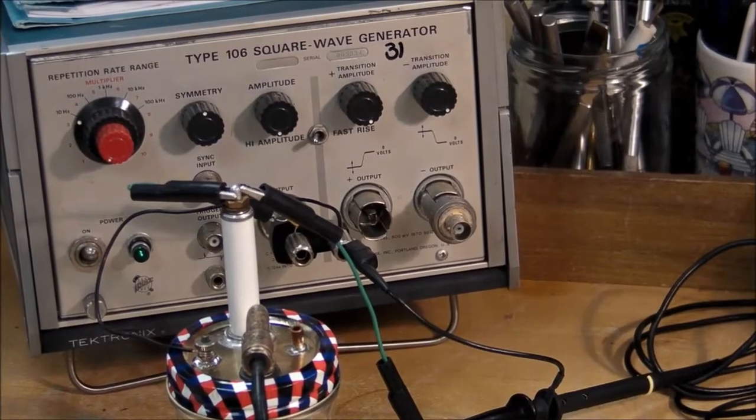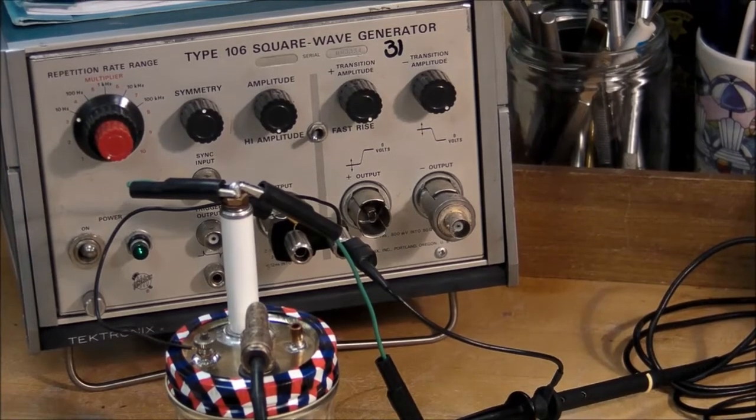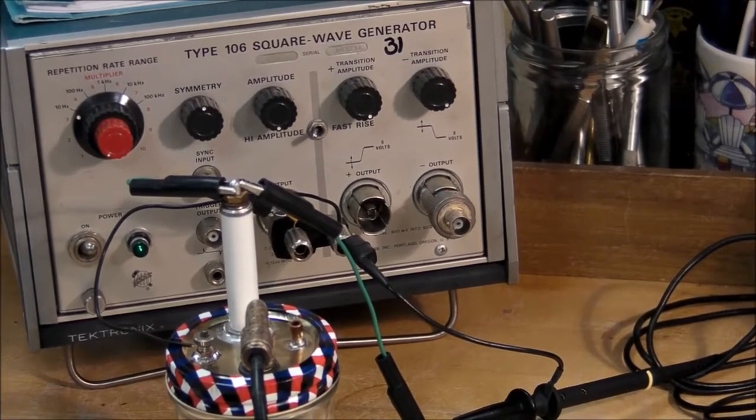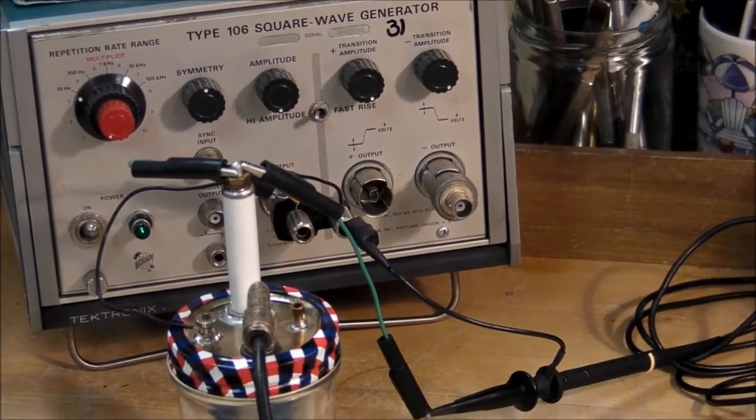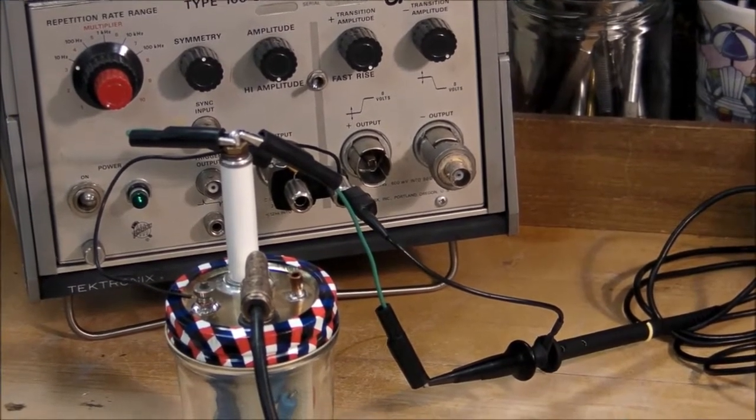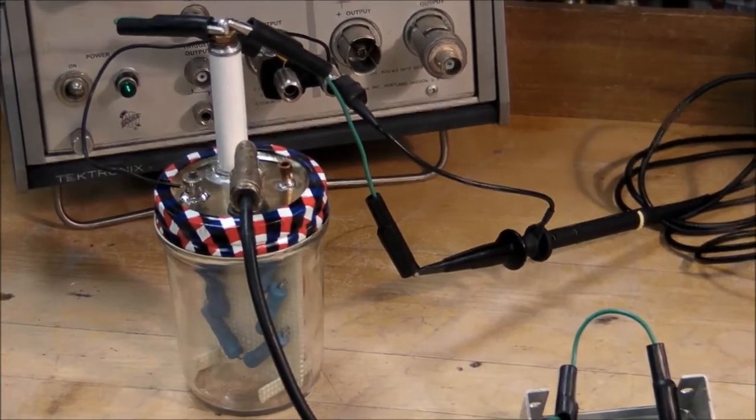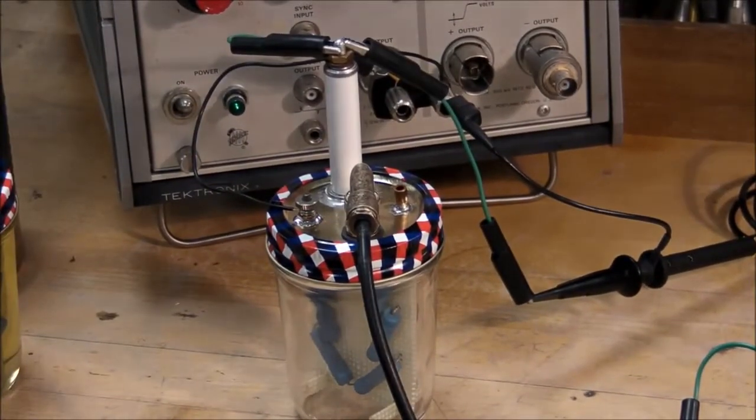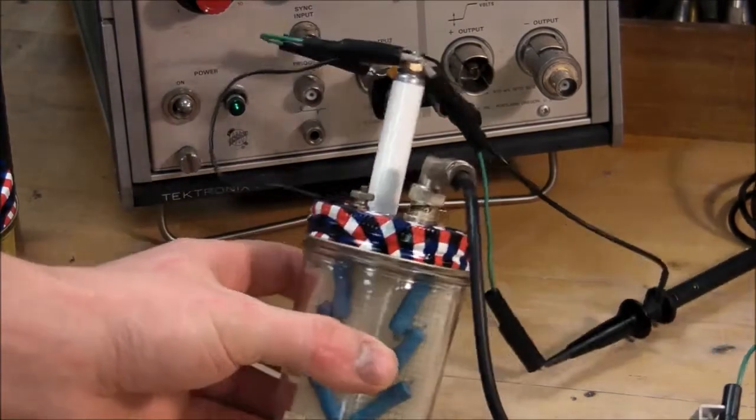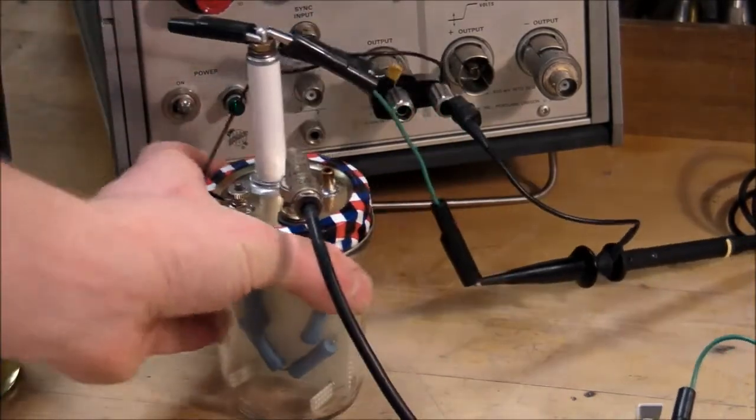For the first test I'll be using my Tektronix 106 square wave generator. It generates a square wave from 0 to 120 volts if it's going into a high impedance load, and this is definitely high impedance, it's many megohms. I've got a one microfarad capacitor right here.